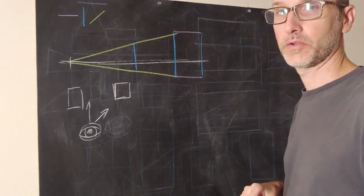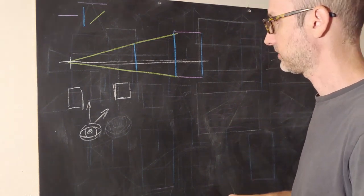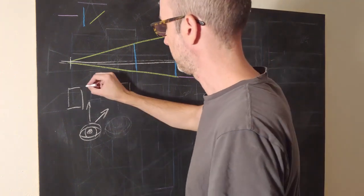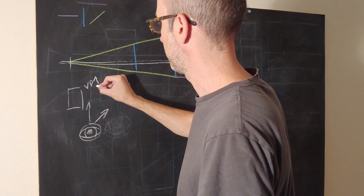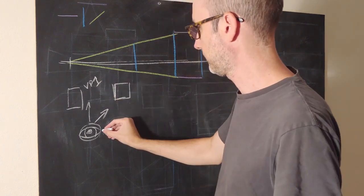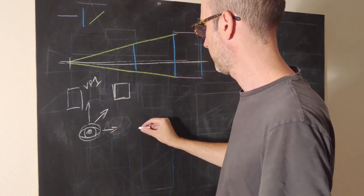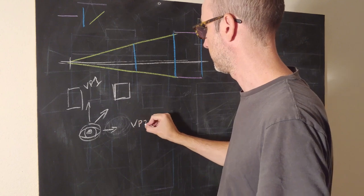And that is two-point perspective. So here we have vanishing point number one that we were dealing with in one-point perspective, and here we have vanishing point number two.